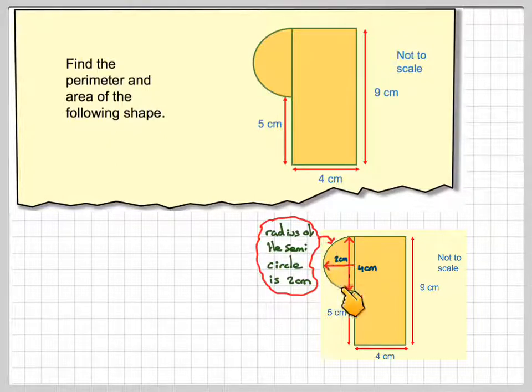Right, the perimeter is going to be all the way outside of the shape. We need to add up those lengths. So the perimeter is going to be pi r. It's going to be pi r because the circumference of a whole circle is 2 pi r, and therefore we just want half of that circumference.